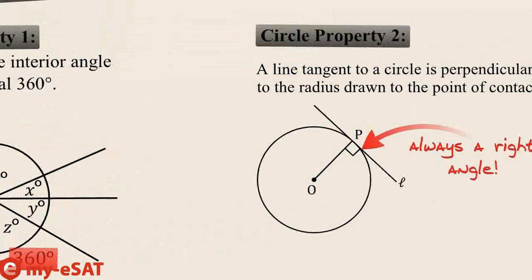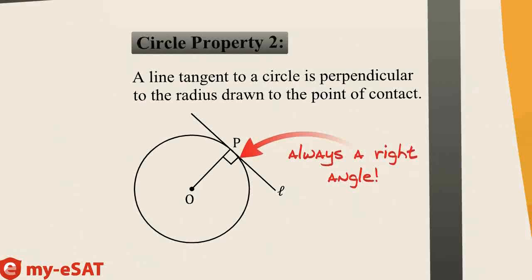Then there is circle property two. The second property is a little trickier. This property says that any line tangent, or touching the circle at one point, is perpendicular to the radius drawn at that point of contact. So a line, like the one on the board, is perpendicular, or at a 90 degree angle, from radius OP. That's all that means.